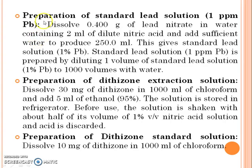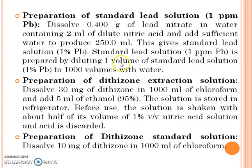Preparation of standard lead solution (1 ppm lead): Dissolve 0.400 g of lead nitrate in water containing 2 ml of dilute nitric acid and add sufficient water to produce 250 ml. This gives the standard lead stock solution. The working standard lead solution is prepared by diluting one volume of the stock standard lead solution to 1000 volumes with water.